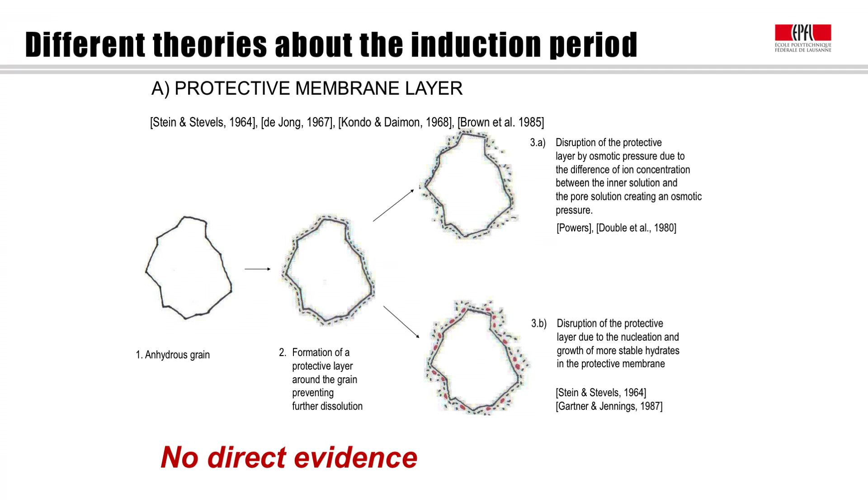But perhaps nowadays, it's more important to realize that there's really no evidence for this protective layer. Back in the 60s, when people first came up with this idea, the fact we couldn't see it wasn't really too much of a problem. But nowadays, where we have very advanced characterization tools, this is really a big issue. I mean, it's like the emperor's new clothes.